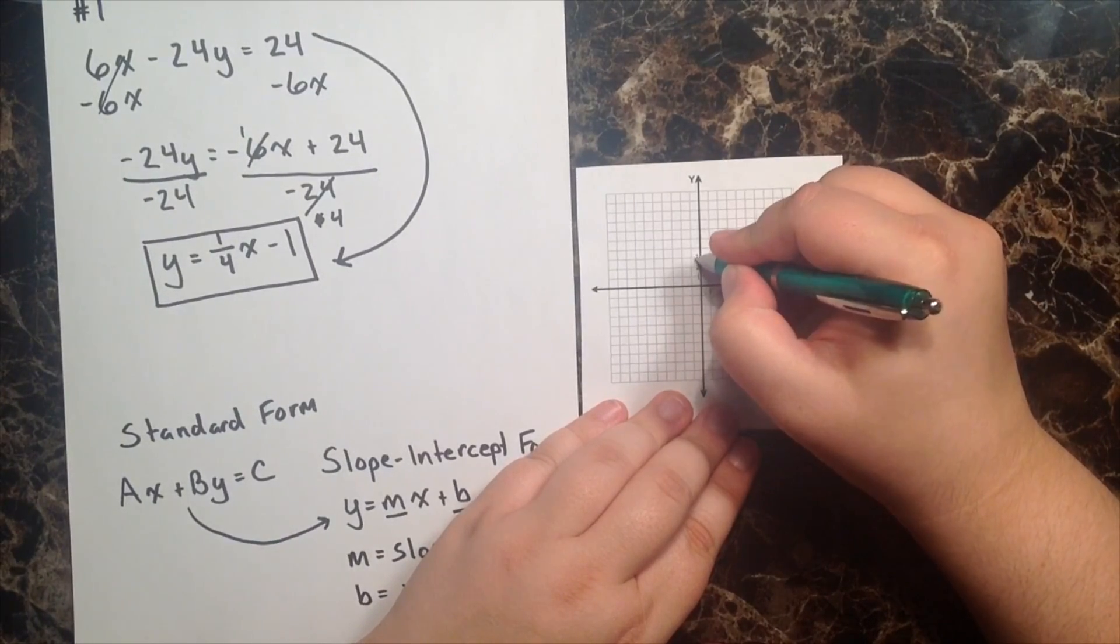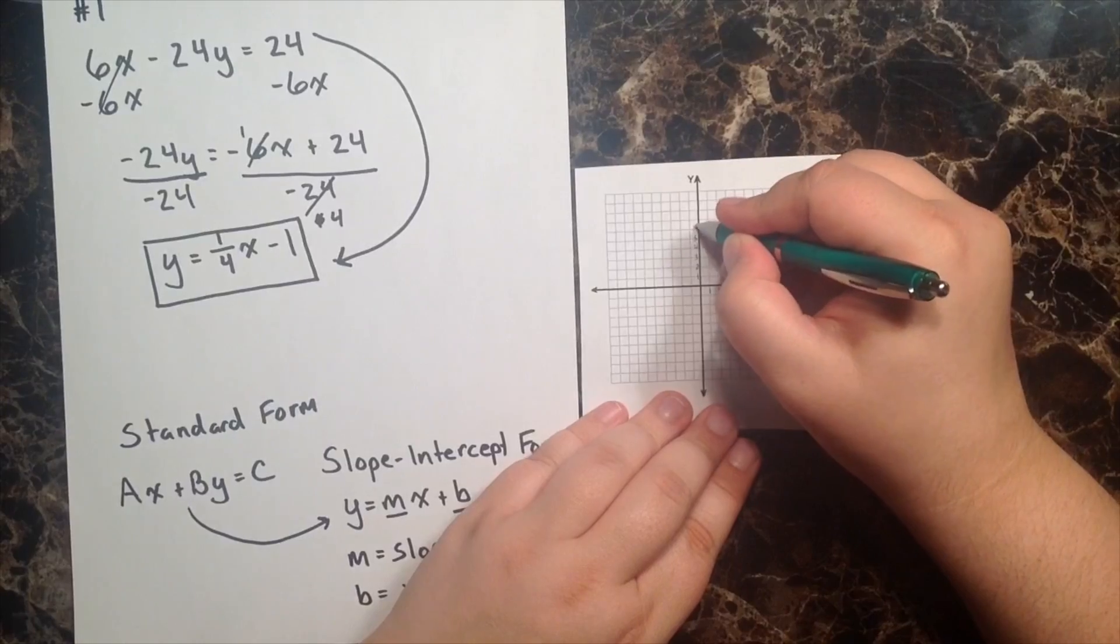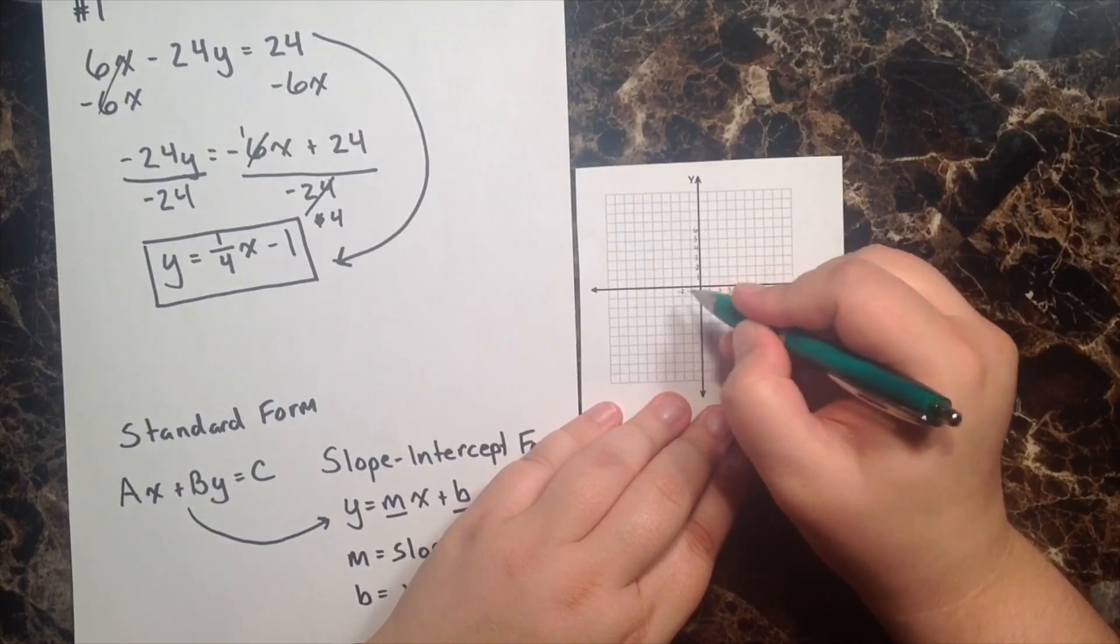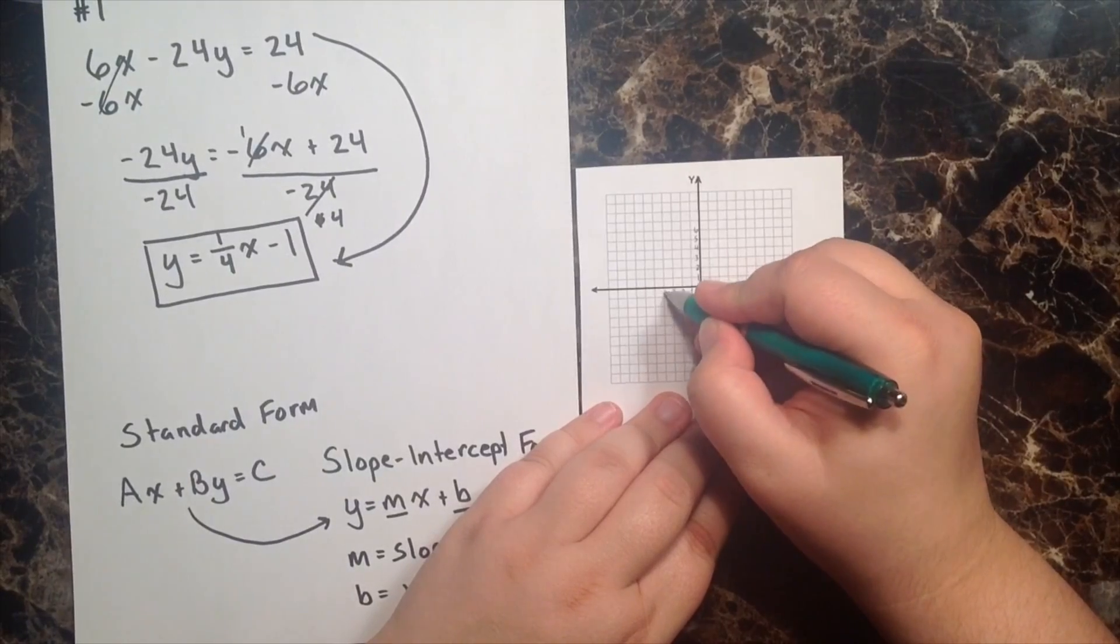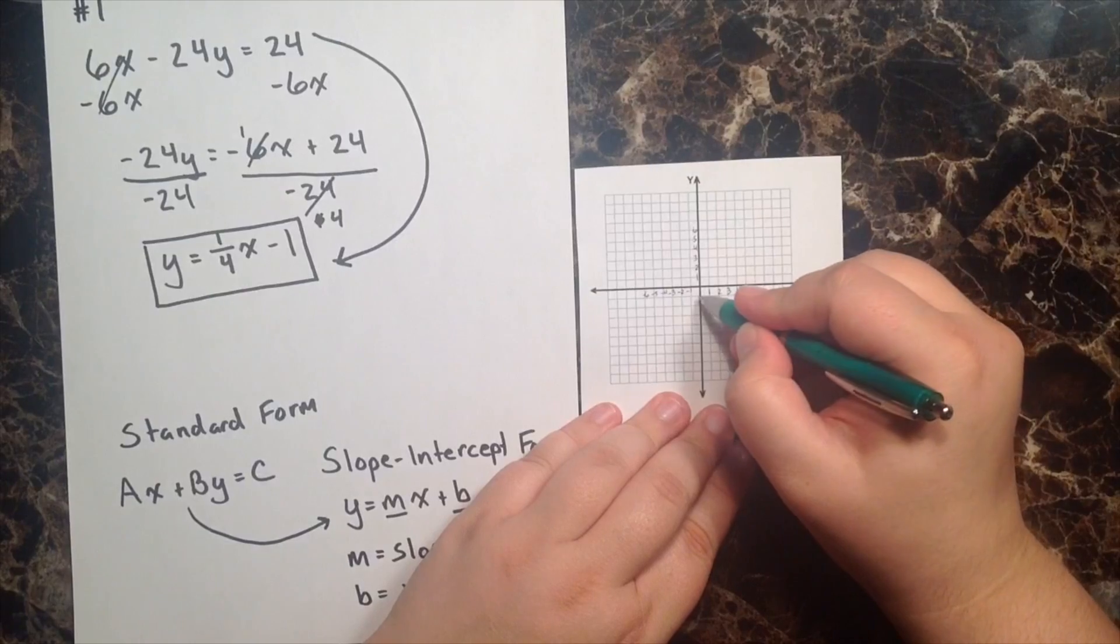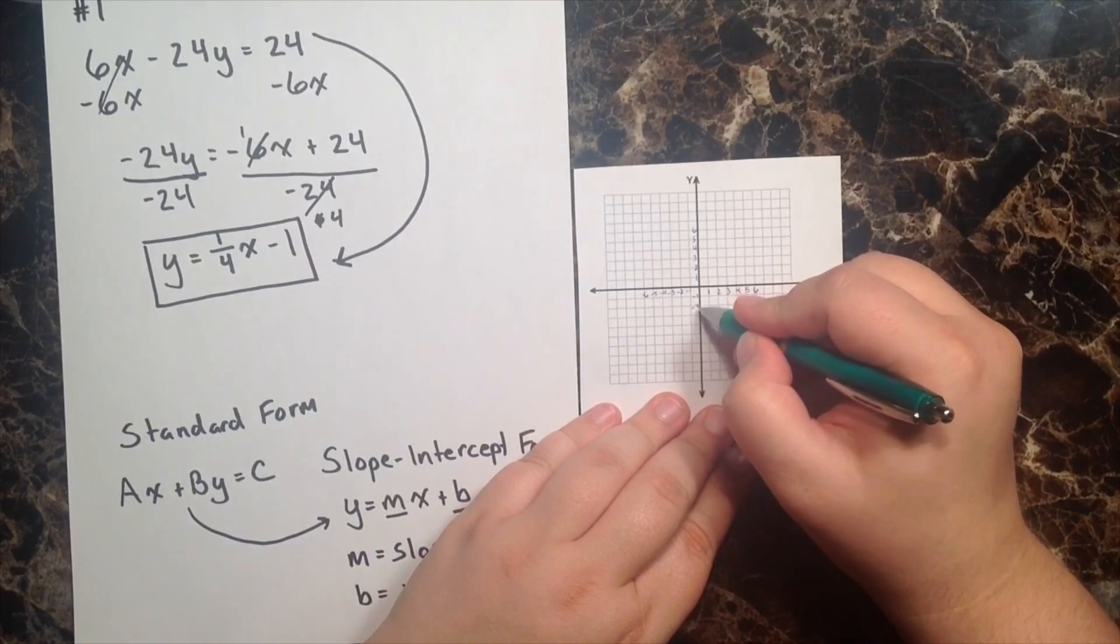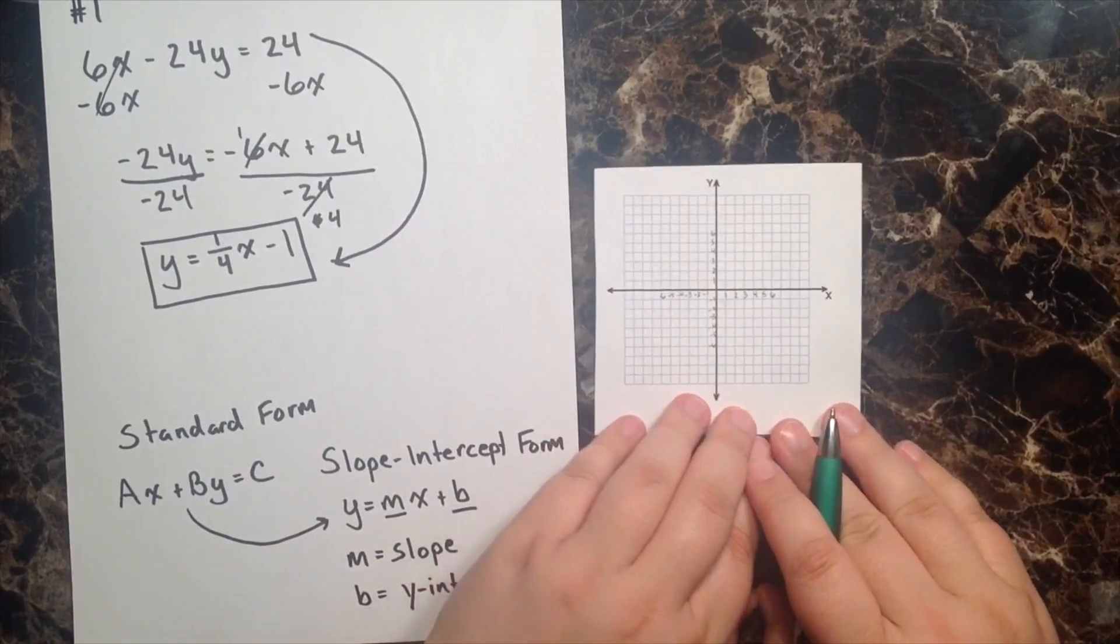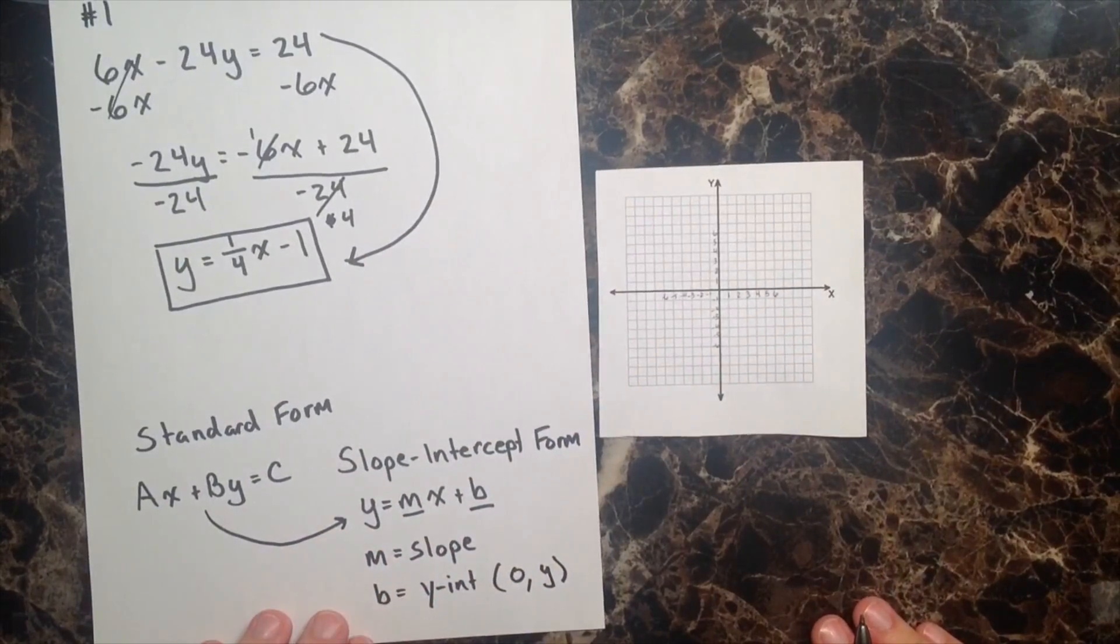And let's go ahead and actually label our units of measure here. Now let me go up to 6. So 1, 2, 3, 4, 5, 6. And then, of course, I'm going negative. So negative 1, 2, 3, 4, 5, and 6. And when I go down, negative 1, 2, 3, negative 4, negative 5, negative 6. Perfect. So now I'm good to go.